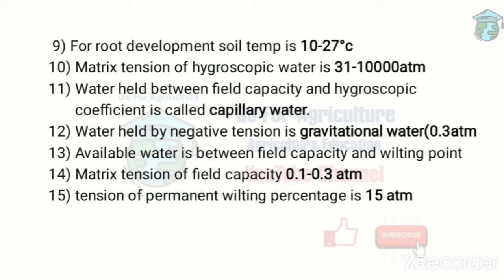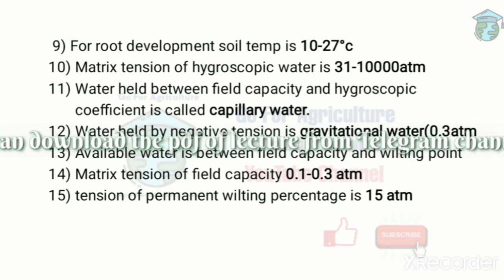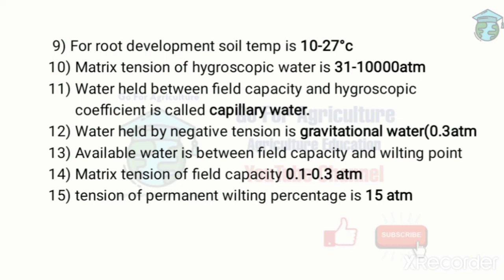Water held by negative tension is called gravitational water. Gravitational water has a matric tension of 0.3 atmosphere or less. Available water is held between field capacity and wilting point — this is a very important question asked in many competitive exams. Field capacity is 1/3 atmosphere and wilting coefficient is 15 atmosphere.